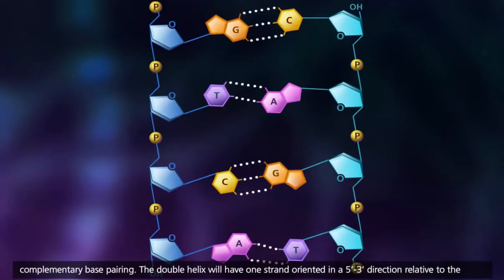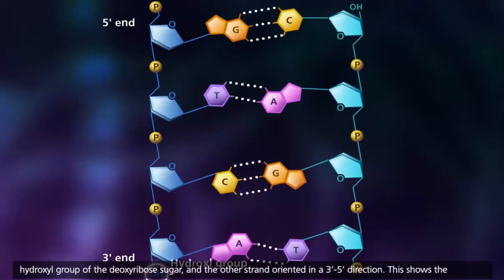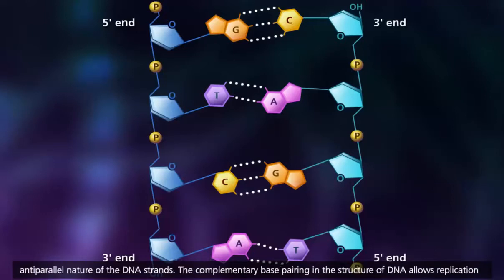The double helix will have one strand oriented in a 5' to 3' direction relative to the hydroxyl group of the deoxyribose sugar, and the other strand oriented in a 3' to 5' direction. This shows the anti-parallel nature of the DNA strands.